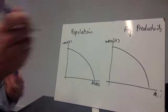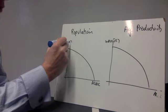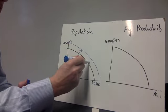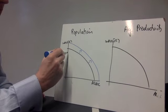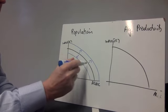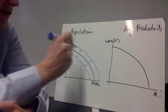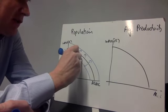So population. I'm sure we all know that an increase in population shifts the production possibility frontier out in a roughly parallel sort of way, and a decrease in population causes the production possibility frontier to move in. Yeah, that's an increase in population, that's a decrease.